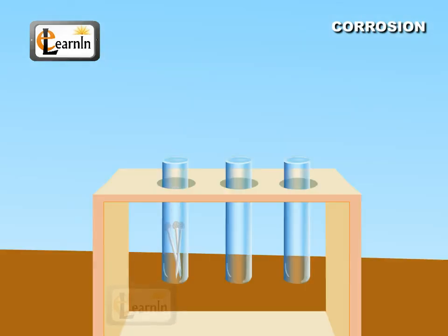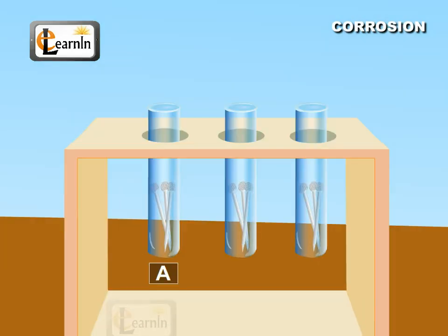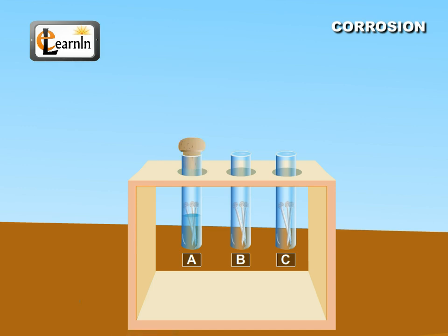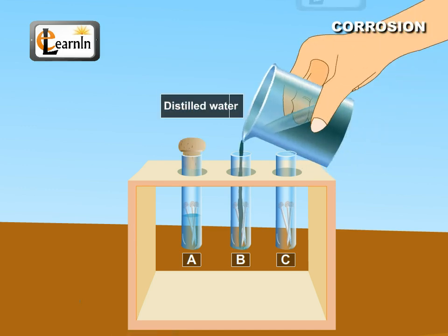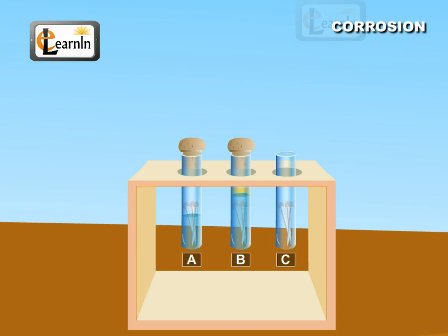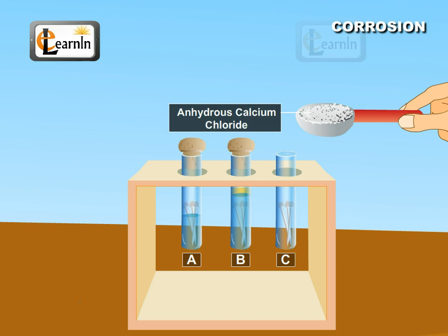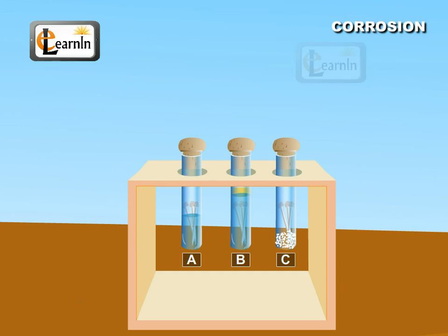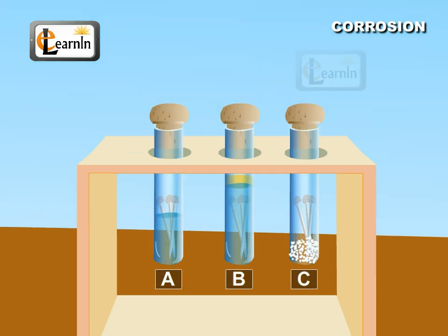Place clean iron nails in three test tubes labeled A, B, and C. Some water should be poured into test tube A, and a cork should be placed on it. Boiled distilled water and about one millimeter of oil should be added to test tube B and covered with a cork. The air is prevented from dissolving in water due to the oil which floats on the water. A small amount of anhydrous chloride should be added to test tube C and it should be corked. The moisture present in this test tube will be absorbed by the anhydrous chloride.